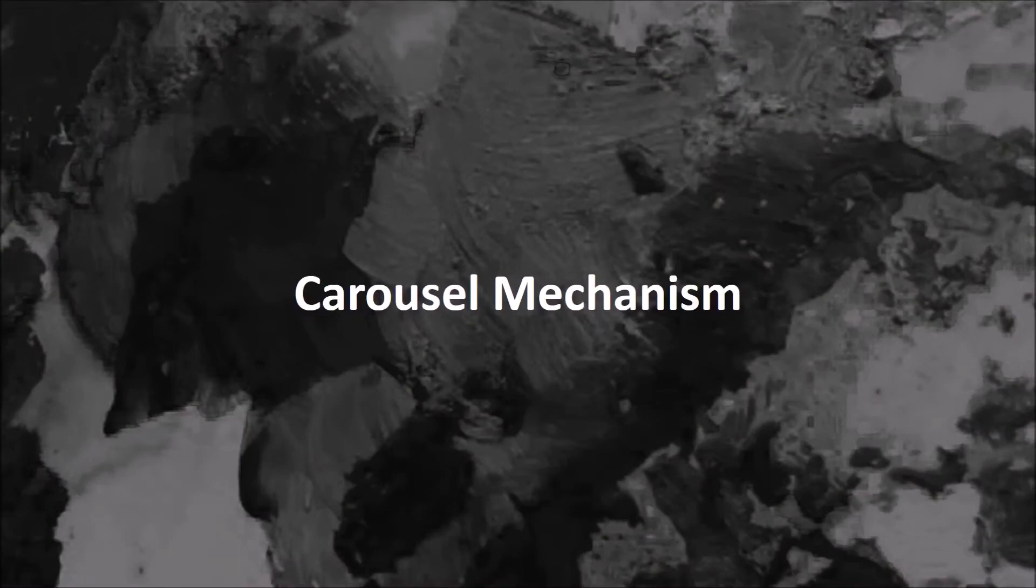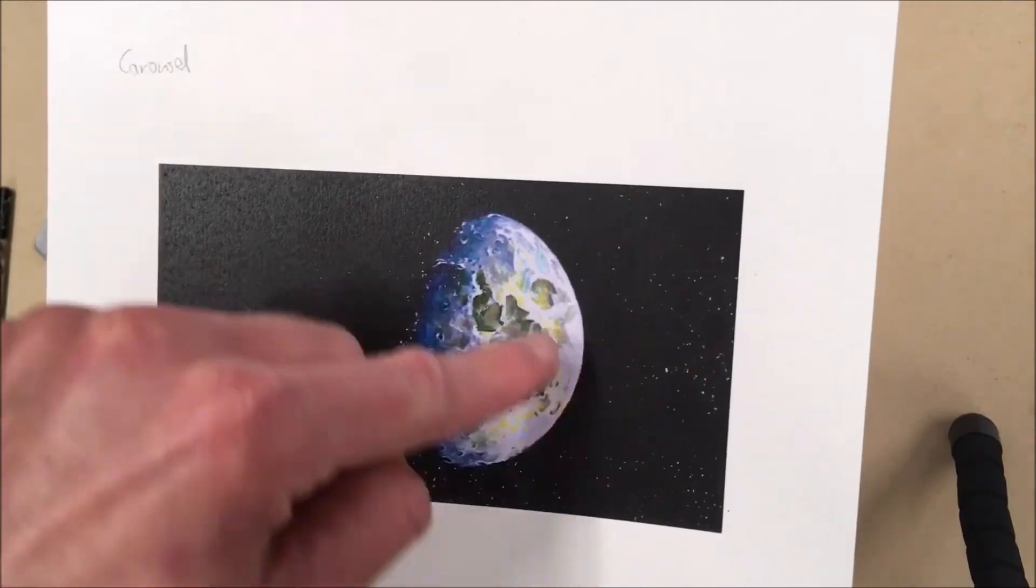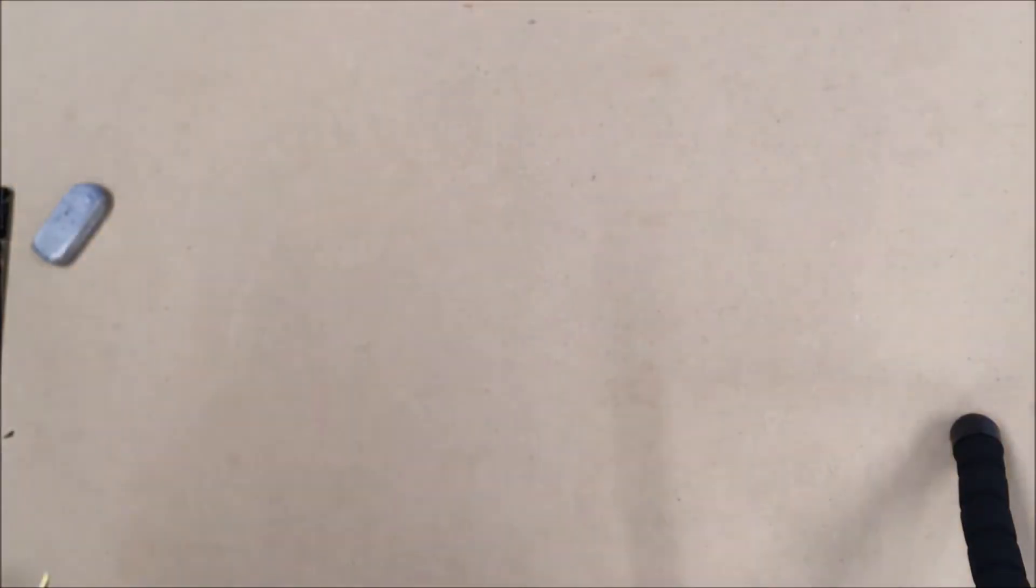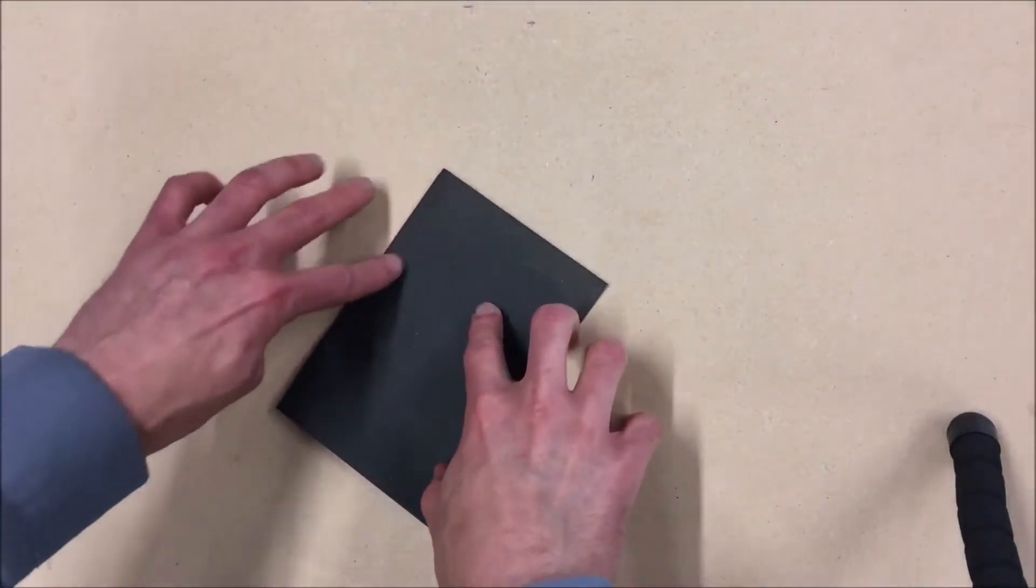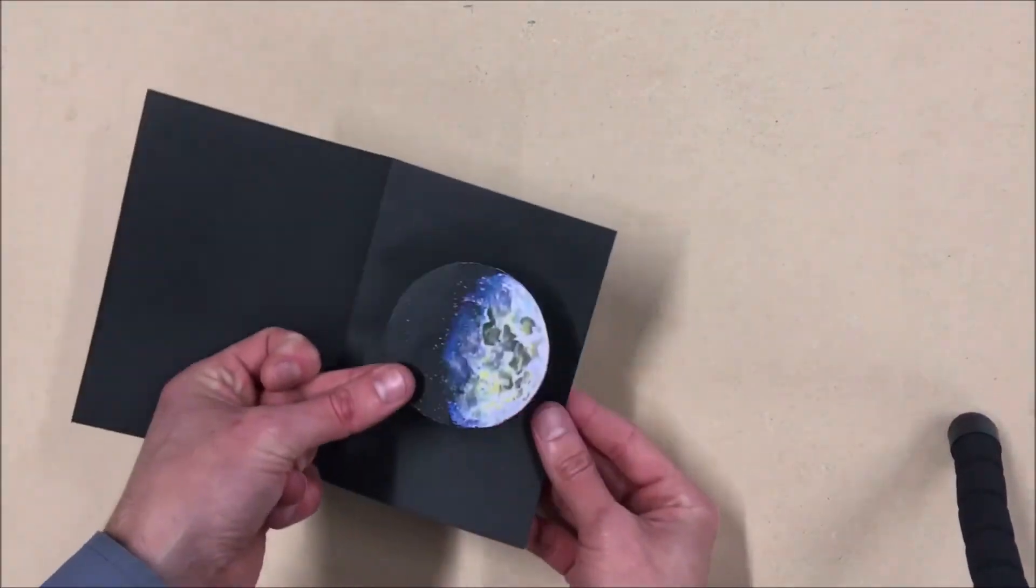Carousel Mechanism. First, work out which part of your page is that you're wanting to spin. In this case, the moon picture. Then fold your piece of card in half so it opens up. Cut out your moon image.